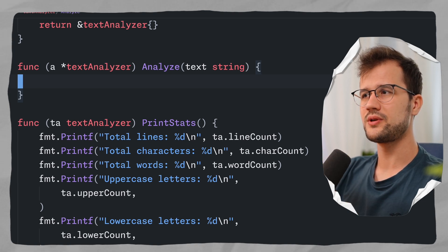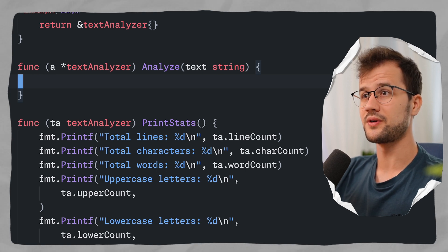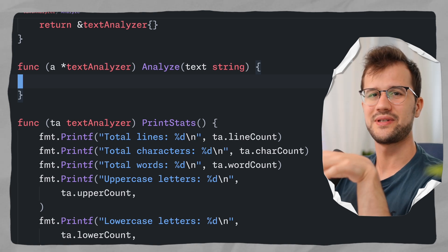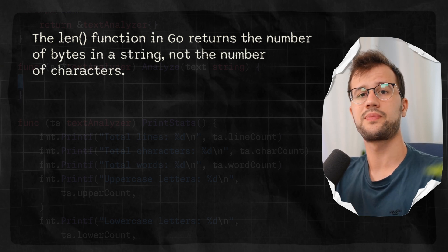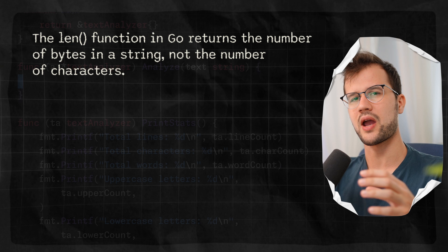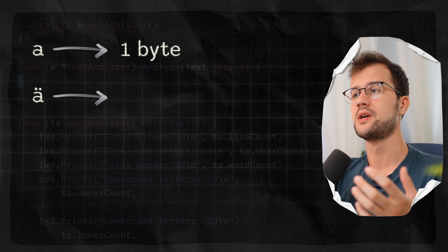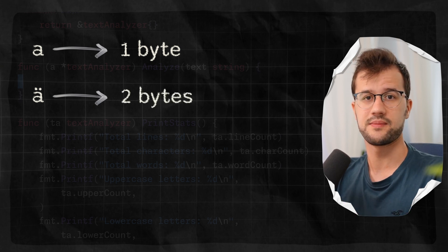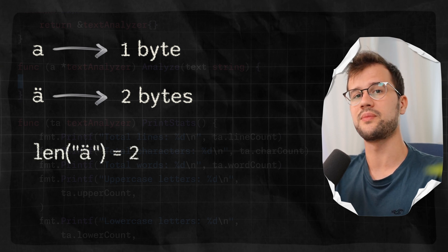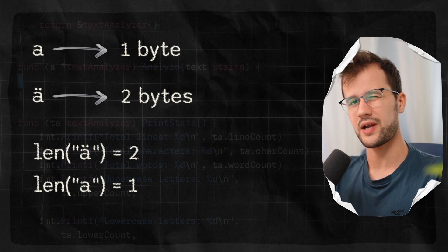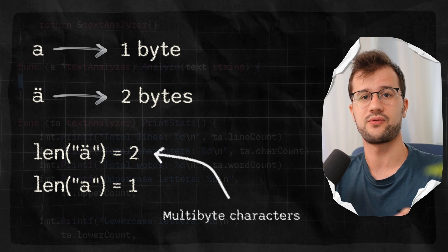You might assume we could use the `len` function for character count, but this is not the case — this is really important to understand. Strings are UTF-8 encoded, and not all characters take up the same number of bytes. For instance, a character like 'A' takes one byte, whereas an emoji like the rocket takes four bytes in UTF-8. The `len` function gives an inaccurate result for Unicode text, especially when dealing with multi-byte characters like emojis.